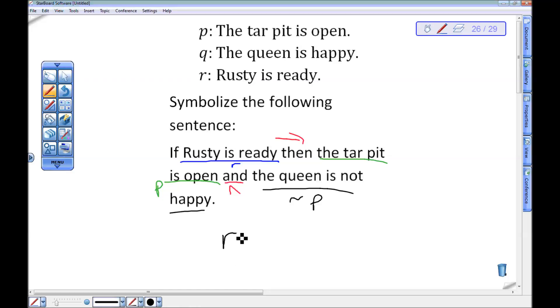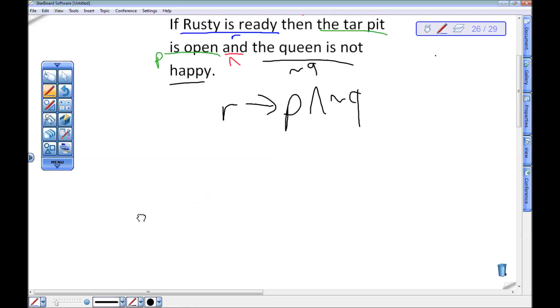So let's see if we can put it all together here. If Rusty is ready, R, then I need my arrow. The tar pit is open, P, and it's a conjunction. The queen is not happy, not Q. Wow, I got dyslexic on you for a second there, sorry. Queen is not happy should be not Q. So if R then P and not Q. If I just need to symbolize this statement that's fine, okay? If R then P and not Q.